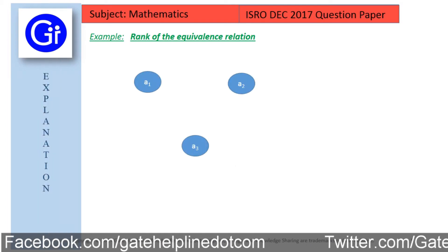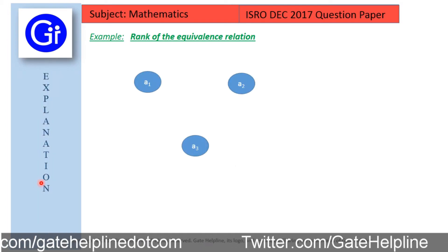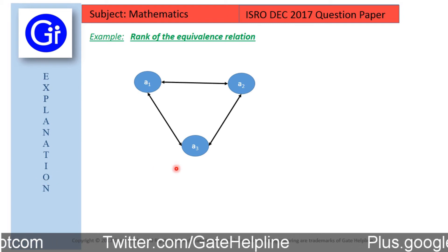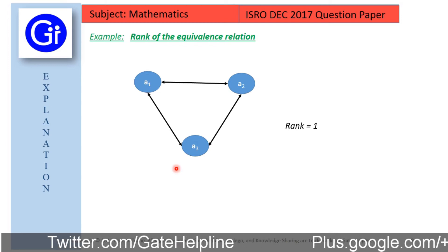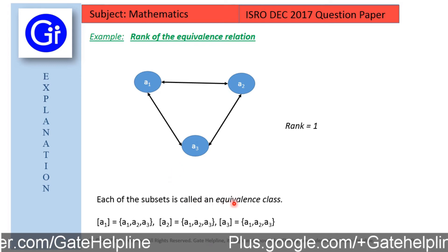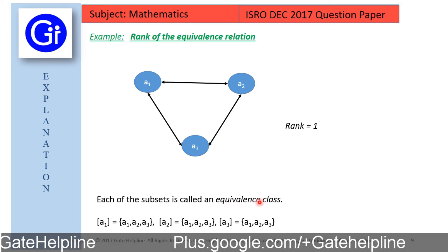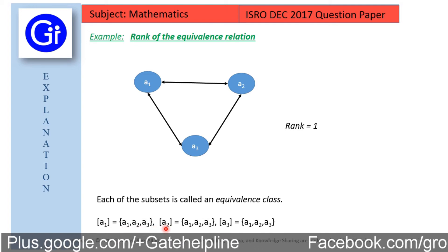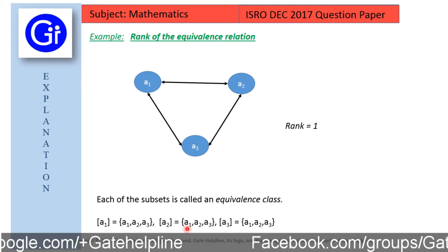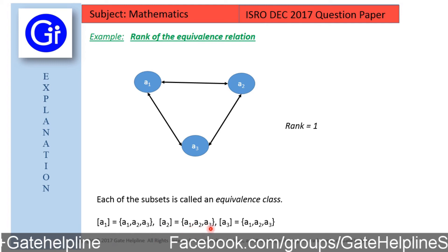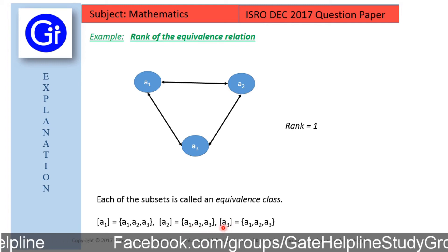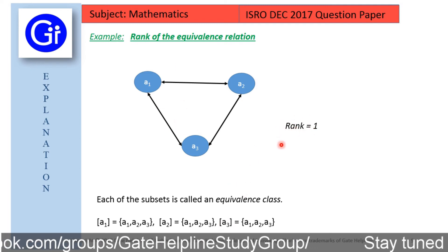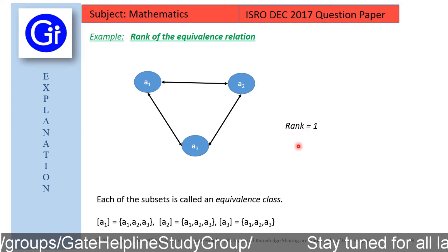Similarly, if we have 3 elements A1, A2 and A3 in set S and all three elements are connected to each other, the rank is 1. Each subset is called an equivalence class, and here the equivalence class is 1 because A1, A2 and A3 all belong to the same equivalence class {A1, A2, A3}. So the equivalence class count is 1 and the rank is also equal to 1.